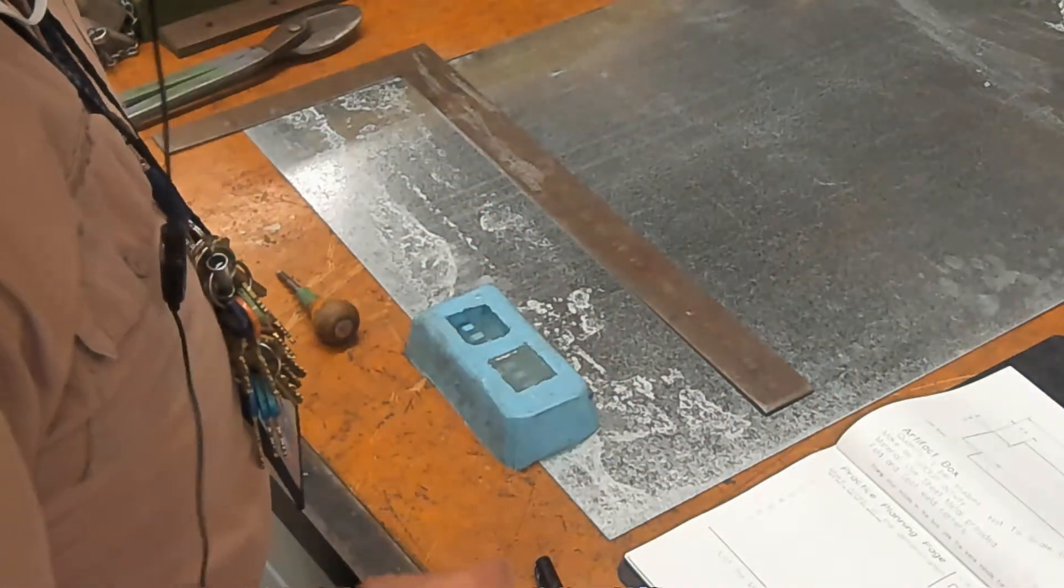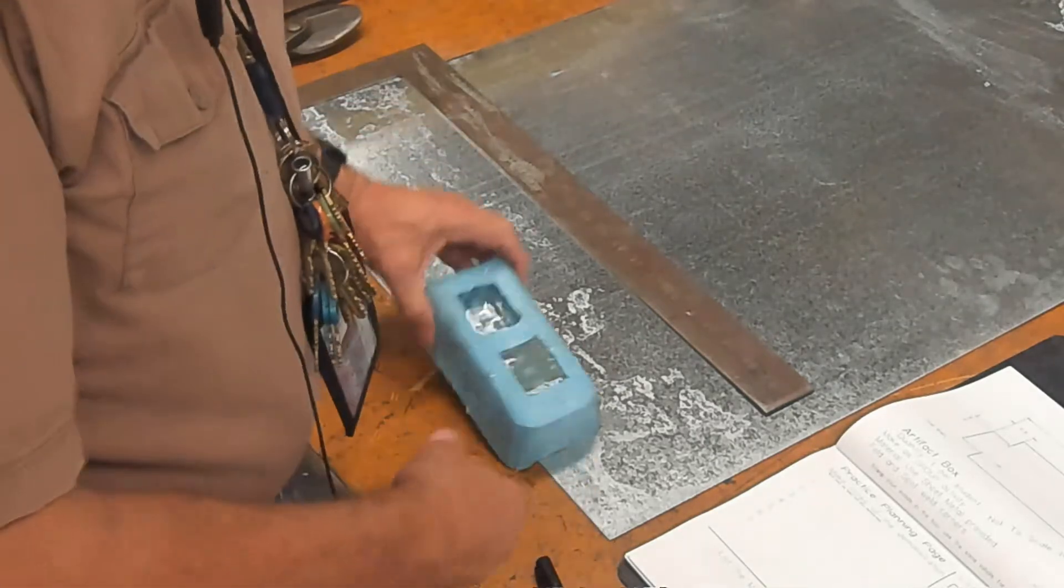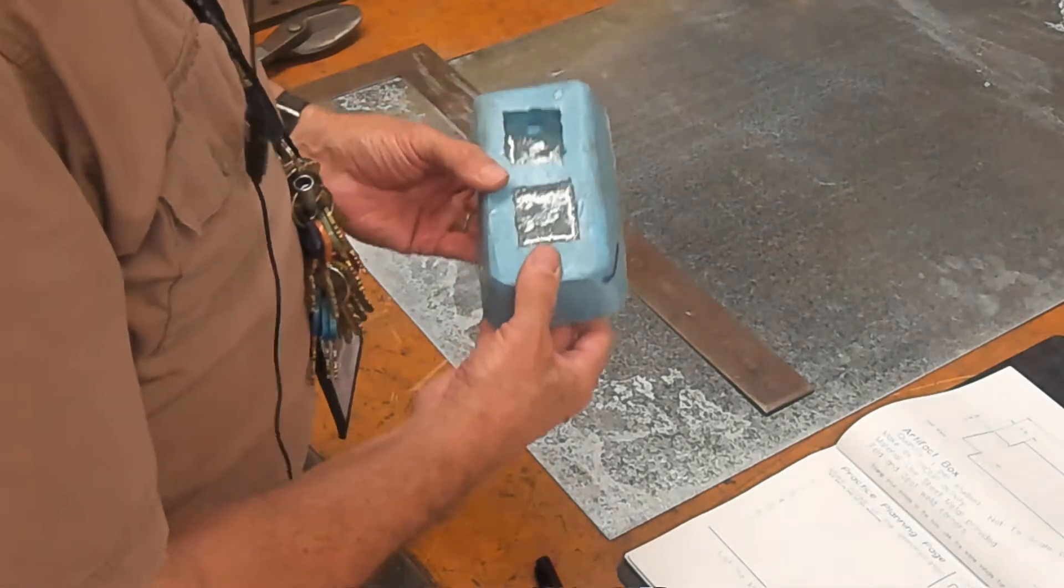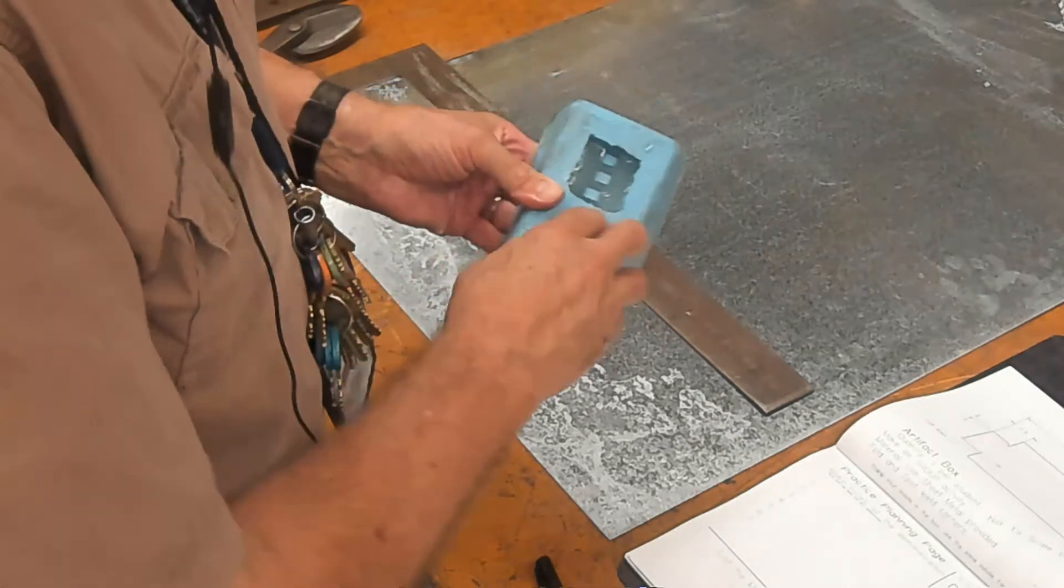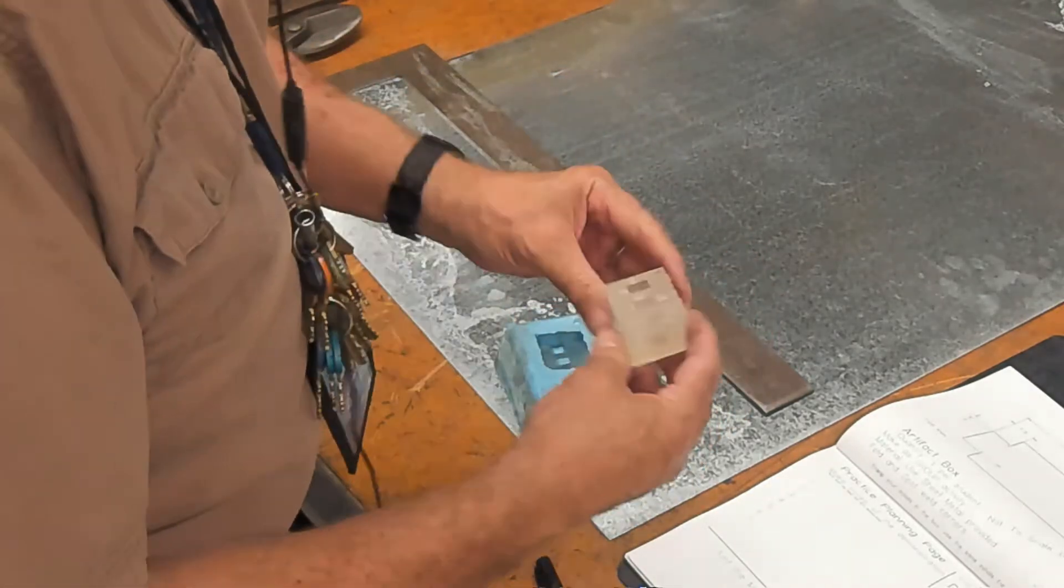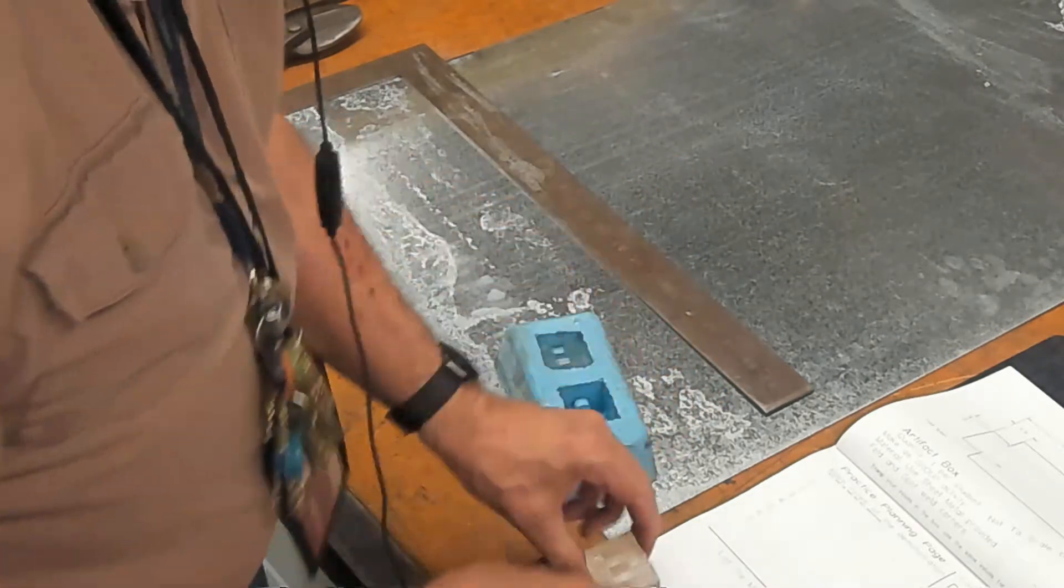While I've been setting up to do the sheet metal part of this activity, I've let the casting harden. You can see now as I take it out that we have a nice little block that can sit on your desk.